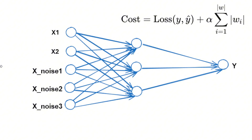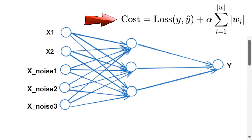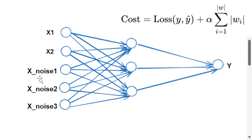As an example, consider a neural network where we have x1, x2, and three other features — xNoise1, xNoise2, and xNoise3 — which are random noises. If the target variable y only depends on x1 and x2, and not on the noise features at all, then with L1 regularization the weights associated with xNoise1, xNoise2, and xNoise3 should be pretty close to zero, while the weights associated with x1 and x2 should be higher than those in the noise part of the network.